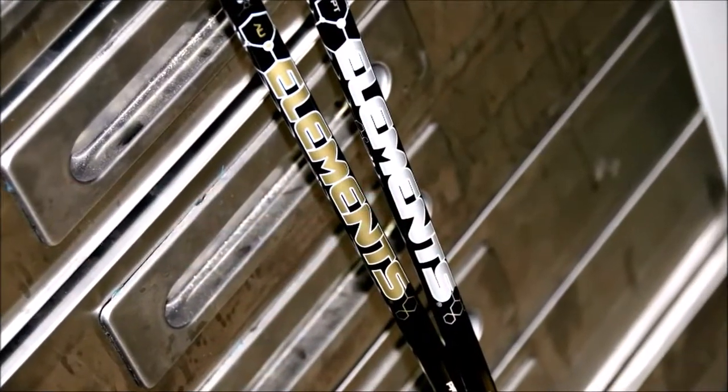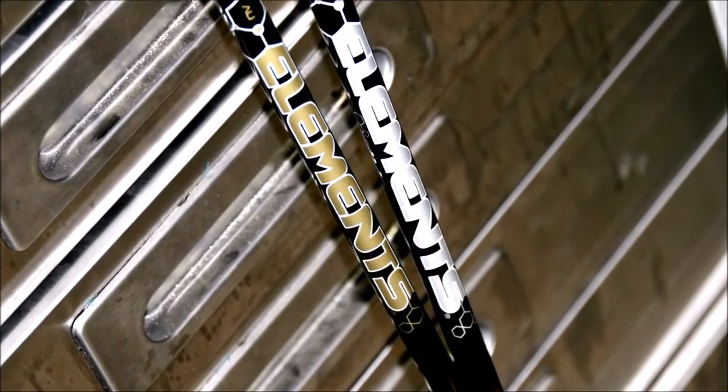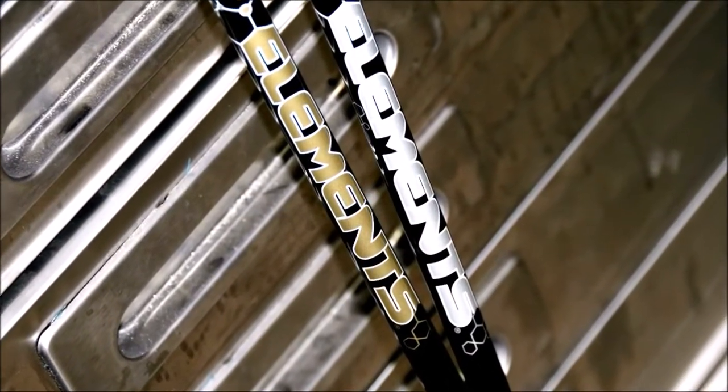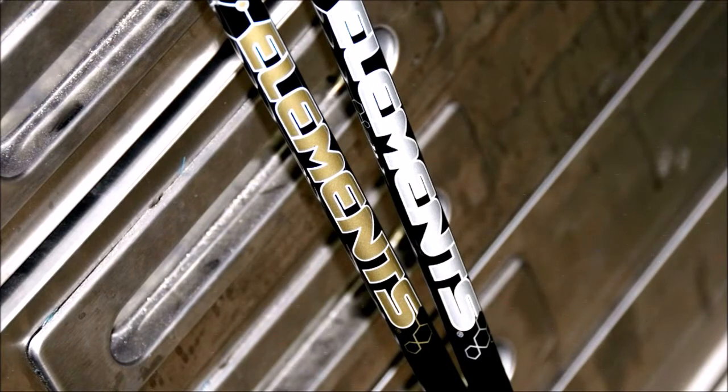Both Platinum and Gold have real similar profiles. The main difference is going to be that Gold is slightly higher torque. It's going to be roughly 3.3 and a half degrees of torque versus 3 degrees of torque in the Platinum model.